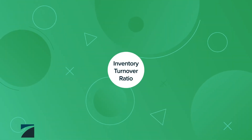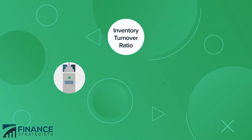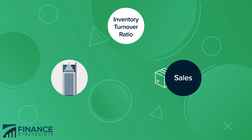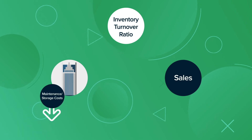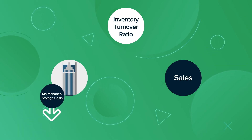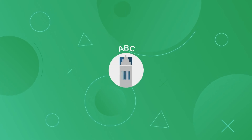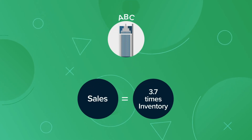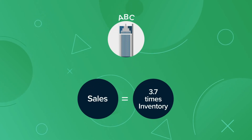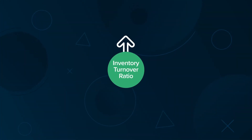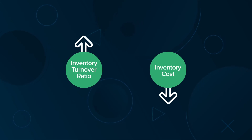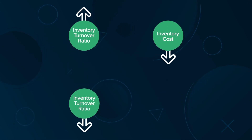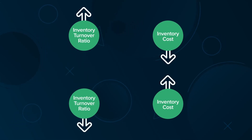The inventory turnover ratio is a measure of how quickly a company can convert inventory to sales and reduce costs associated with maintaining and storing the inventory. In the earlier example, ABC is making sales equal to 3.7 times its inventory. A high figure means the company is efficient and keeps inventory costs to a minimum, whereas a low ratio generally translates to high inventory costs.